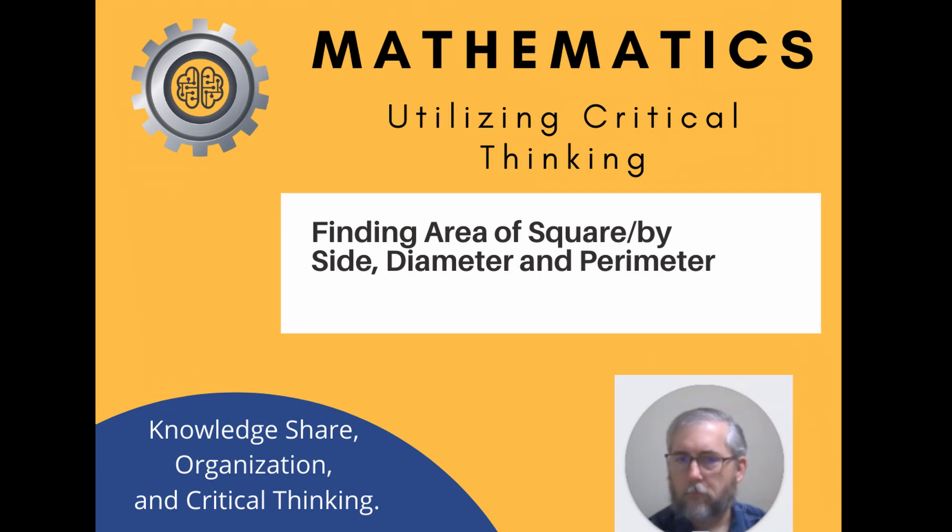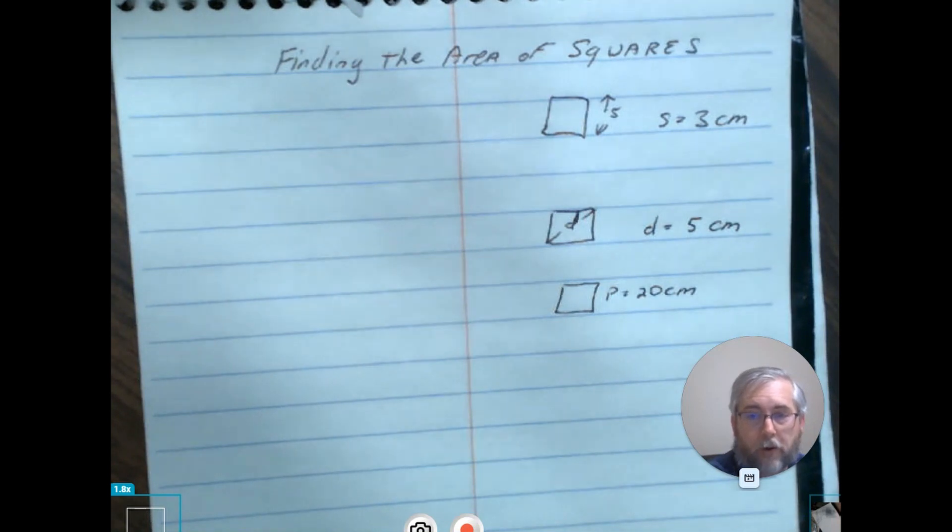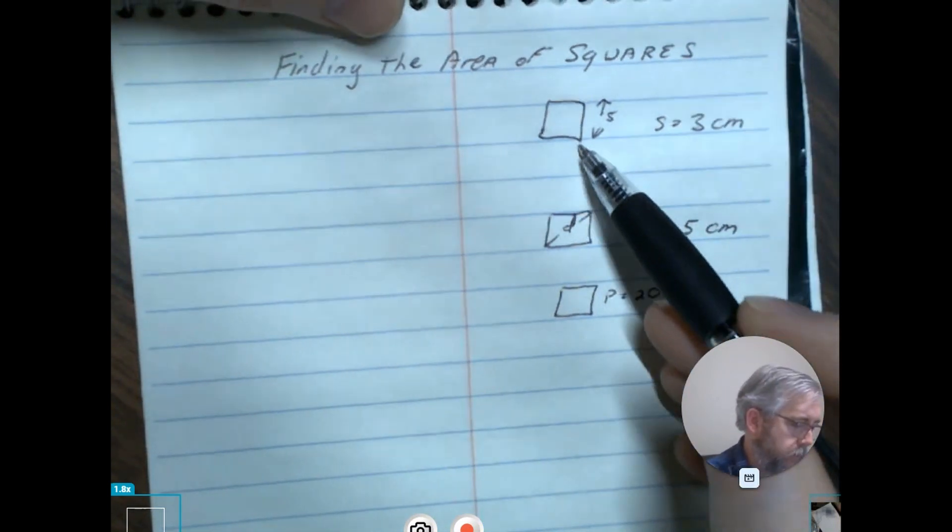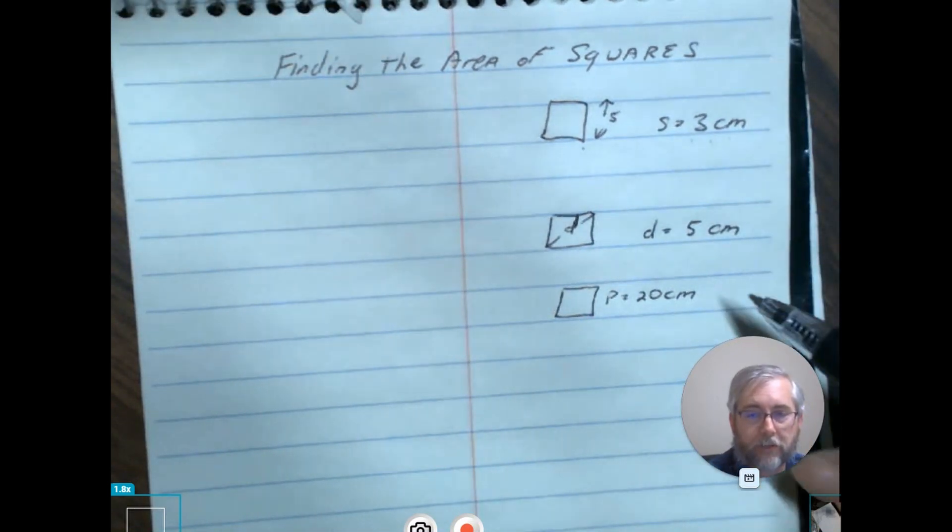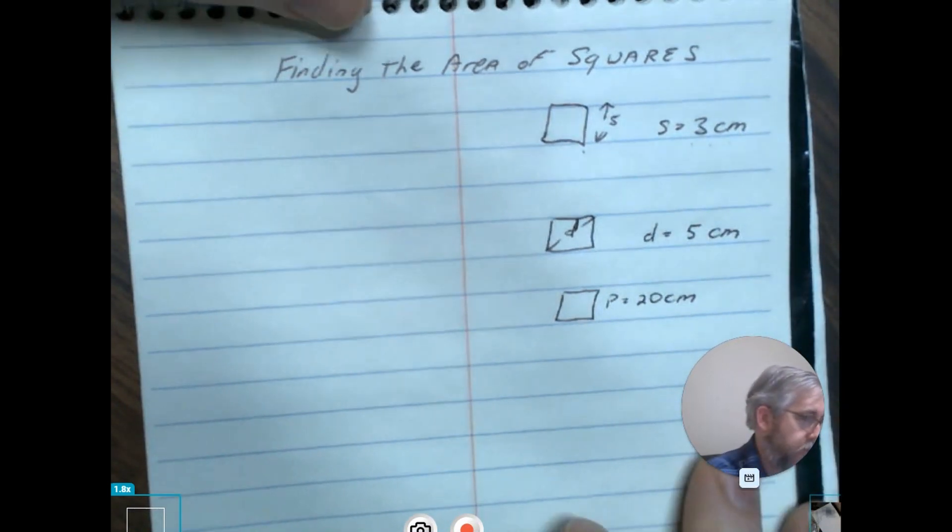In this math example, we're going to find the area of a square. We'll cover a couple of different examples depending on the values that are provided. In the first example, we have a square and we're given that at least one of the sides is equal to three centimeters.